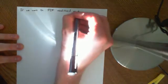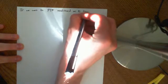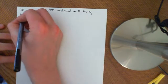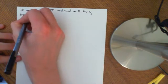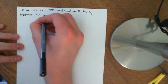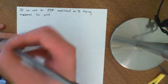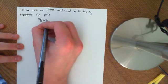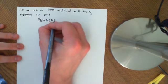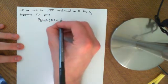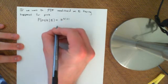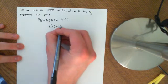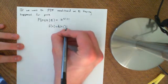So if we want the PDF conditional on E having happened, for P equaling a certain value of K, we need to differentiate this function. So we've got the probability that P is less than or equal to K, given that E occurs, is equal to K to the N plus 1. So if we differentiate that, we get that the PDF is equal to N plus 1 times K to the N.